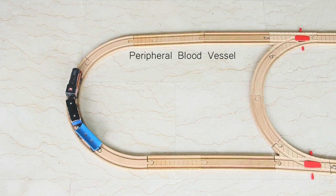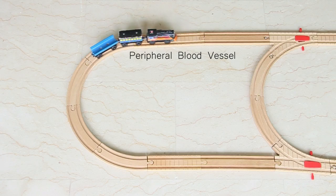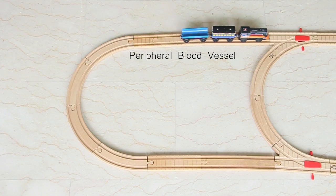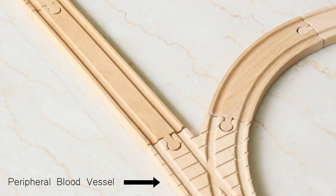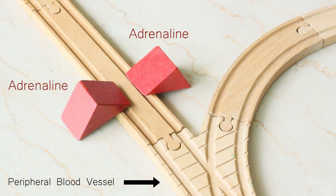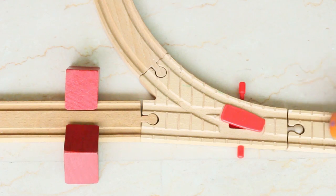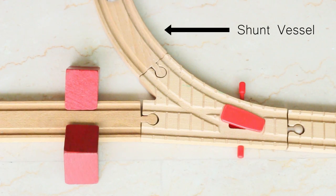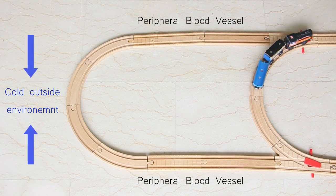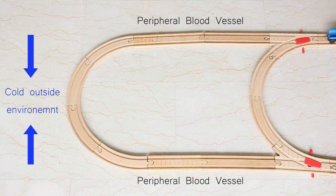The cold blood then travels back through the peripheral vessel and back into the body. If our body did nothing, our blood would get too cold and our bodies would shut down. When the temperature outside is colder than the body temperature, the brain releases a hormone called adrenaline. The adrenaline travels to small peripheral blood vessels near the surface of the skin and causes them to constrict, limiting the blood flow to the surface of the skin. Most of the blood is then redirected along shunt vessels, which connect parallel peripheral vessels. This means the blood doesn't travel as close to the cold outside environment on the surface of the skin, and therefore loses less heat. So that's basically vasoconstriction in a nutshell.